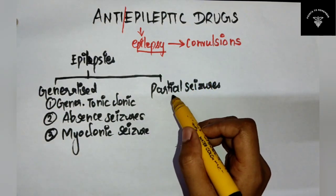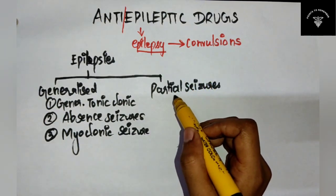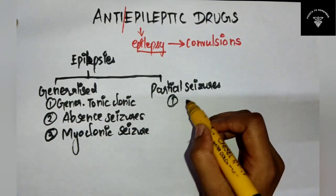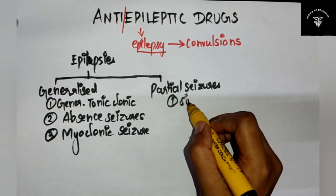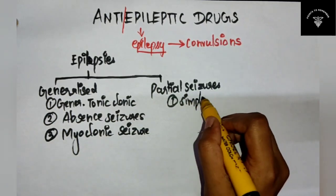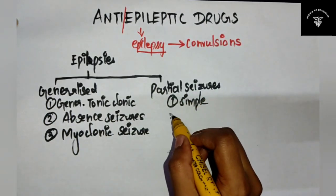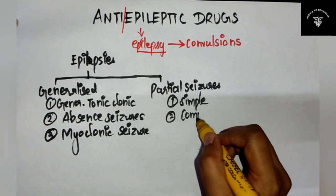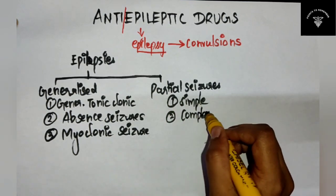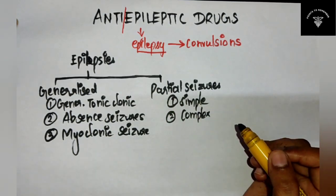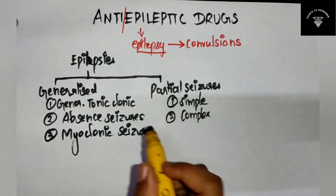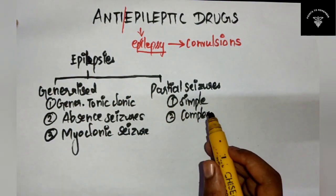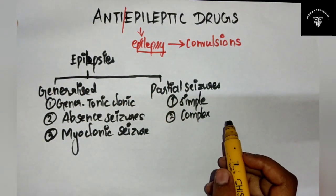Moving on to partial seizures, it is classified as simple partial seizures and complex partial seizures. You have to mention this classification of epilepsy.